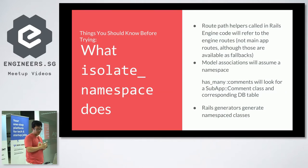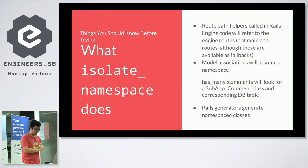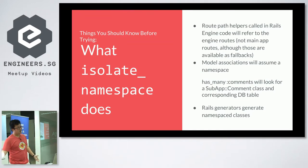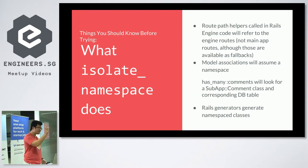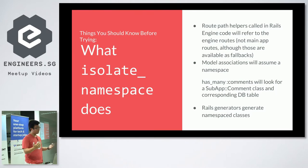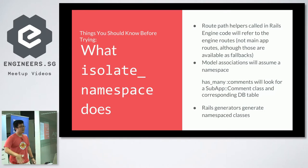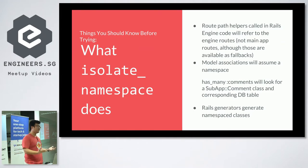Second thing: model associations will assume a namespace, provided you use `isolate_namespace`. If you say a post `has_many :comments`, it's going to look for a model called comments under the namespace of your Rails engine. The last thing is that if you use the Rails generator inside the directory of your Rails engine, it will generate the namespaced versions of those classes. So everything becomes namespaced, and this is the way that a Rails engine separates itself from your main Rails app's code.